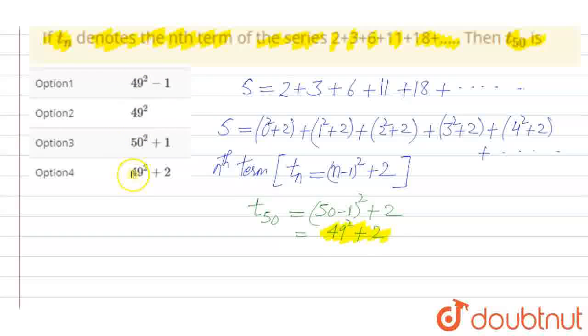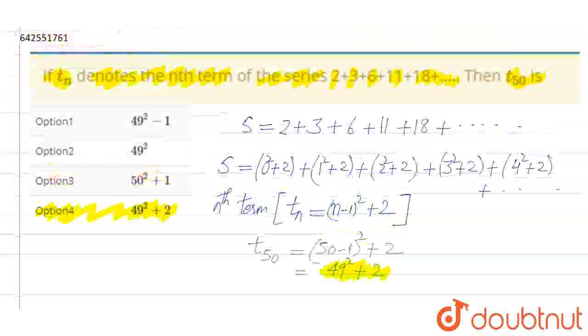T50 is option 4, which is 49 squared plus 2. This is the answer. Thank you.